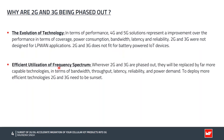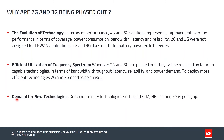Another reason is efficient utilization of the frequency spectrum. Wherever 2G and 3G are phasing out, they will be replaced by far more capable technologies in terms of bandwidth, throughput, latency, reliability, and power consumption. To deploy more efficient technologies, 2G and 3G need to be sunset. The frequency spectrum released by 2G and 3G phase-out will be utilized by 4G and 5G technologies. Since demand for LTM, NB-IoT, and 5G is going up while demand for 2G and 3G is drastically coming down, it is not a business case for network operators to maintain 2G and 3G networks.